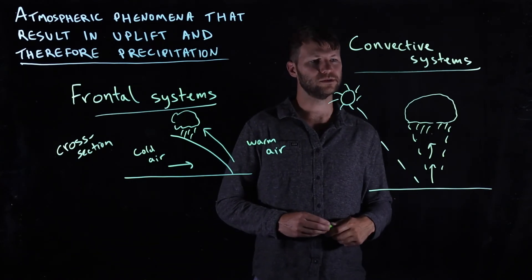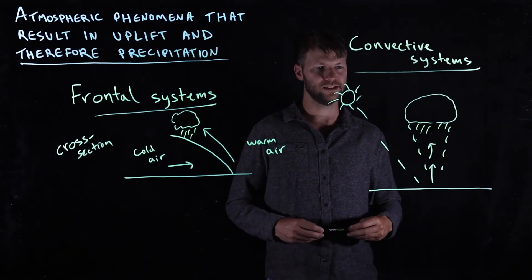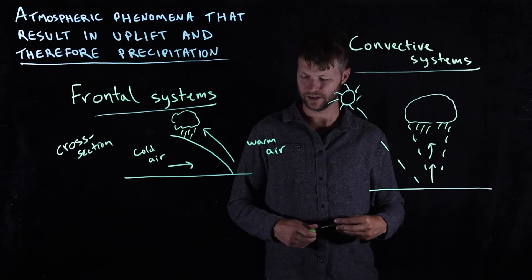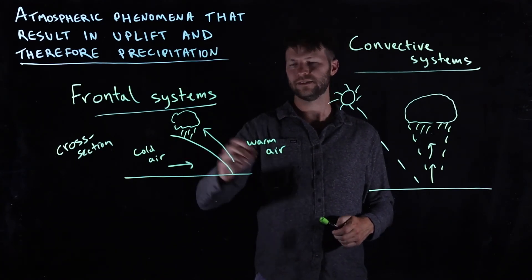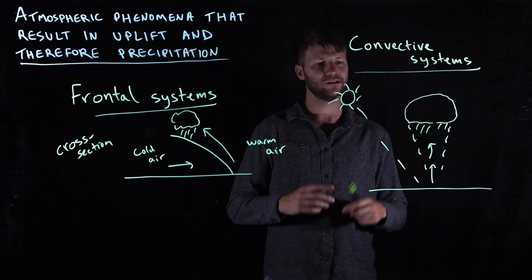These are what are responsible for the thunderstorms that you will see in many parts of the country. And relative to frontal systems, they are of smaller spatial scales.